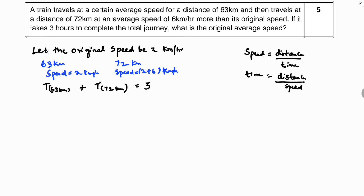Time for 63 km is distance 63 divided by speed x. For 72 km, time is distance 72 divided by speed x plus 6. So the equation is: 63/x + 72/(x+6) = 3.